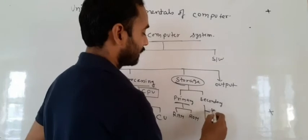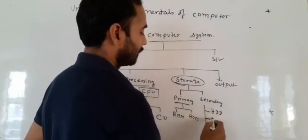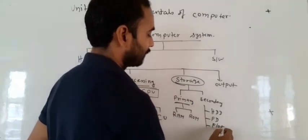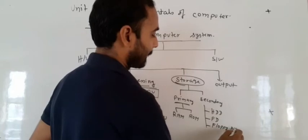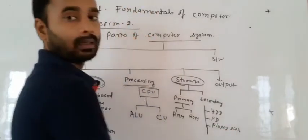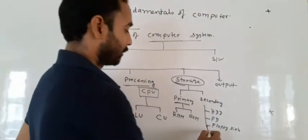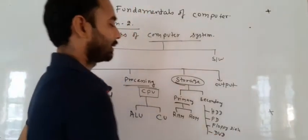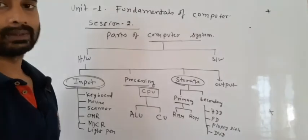And secondary devices: hard disk drive, pen drive, floppy disk, memory card, memory sticks, CD, DVD. So these are all examples of secondary storage devices.